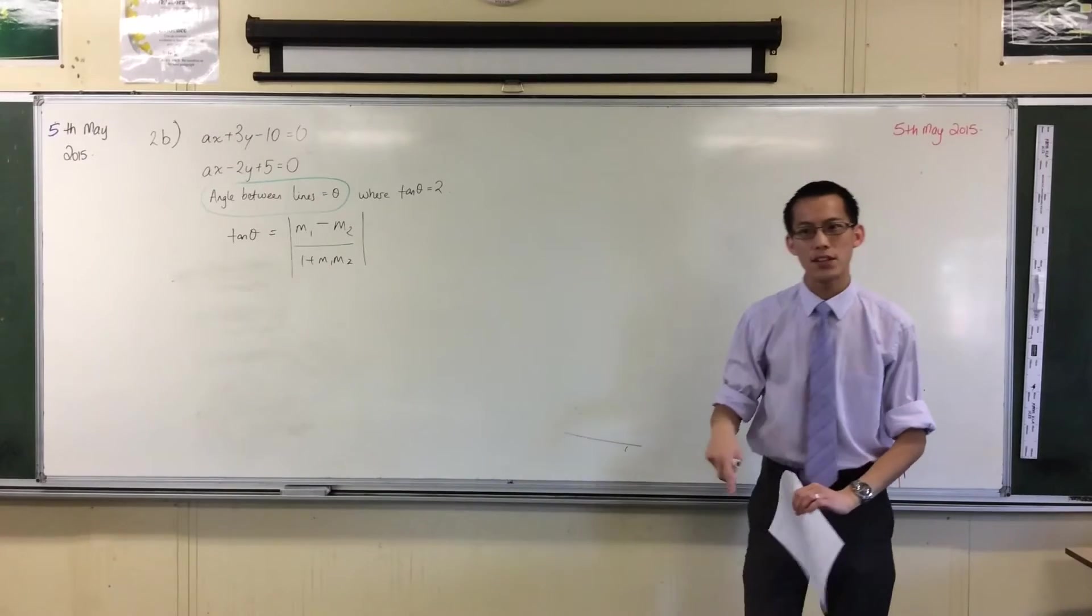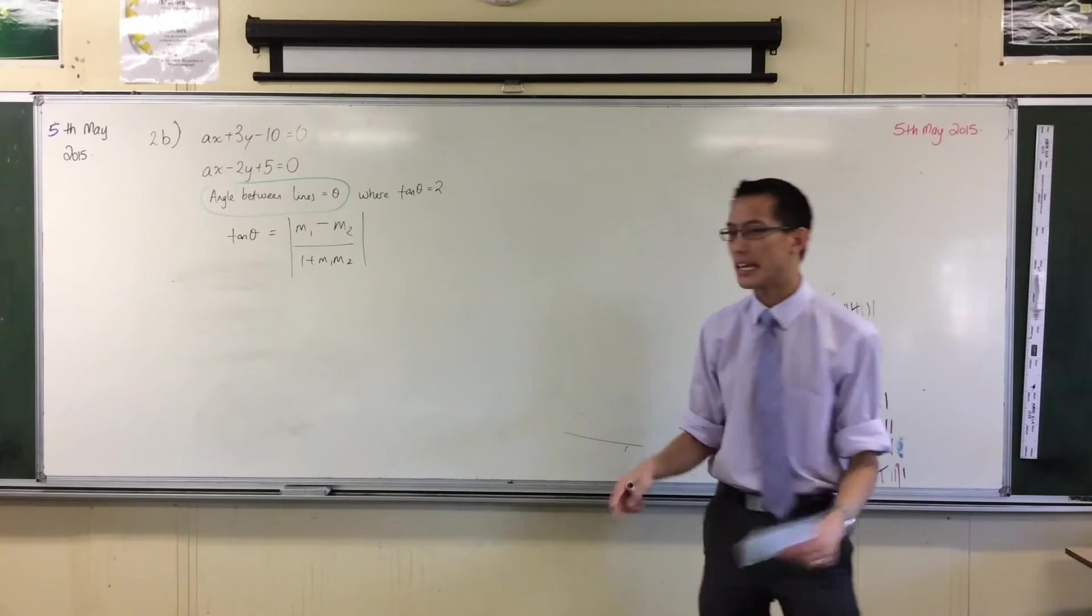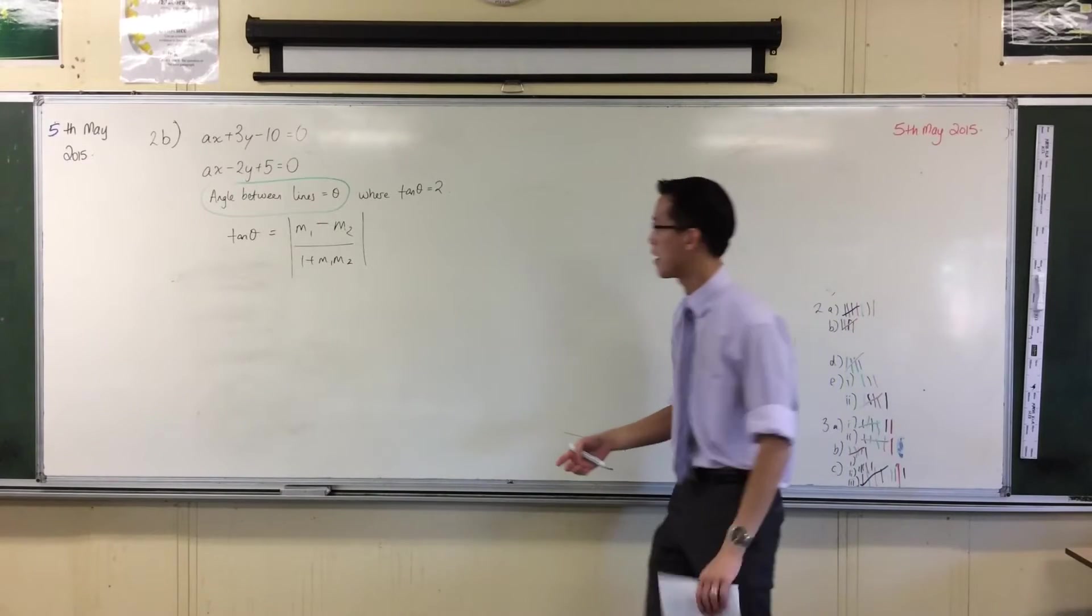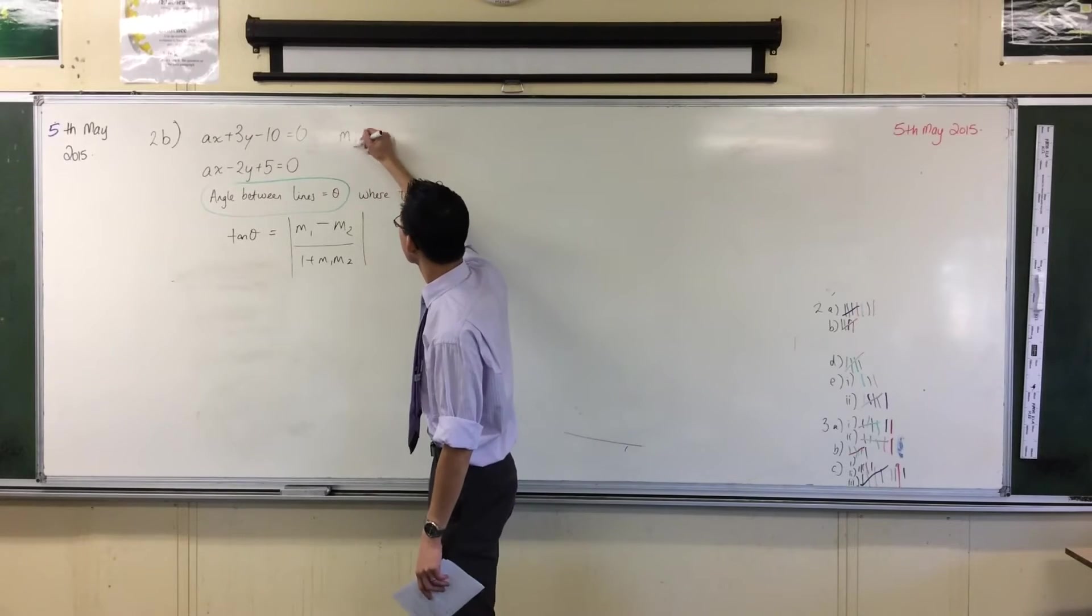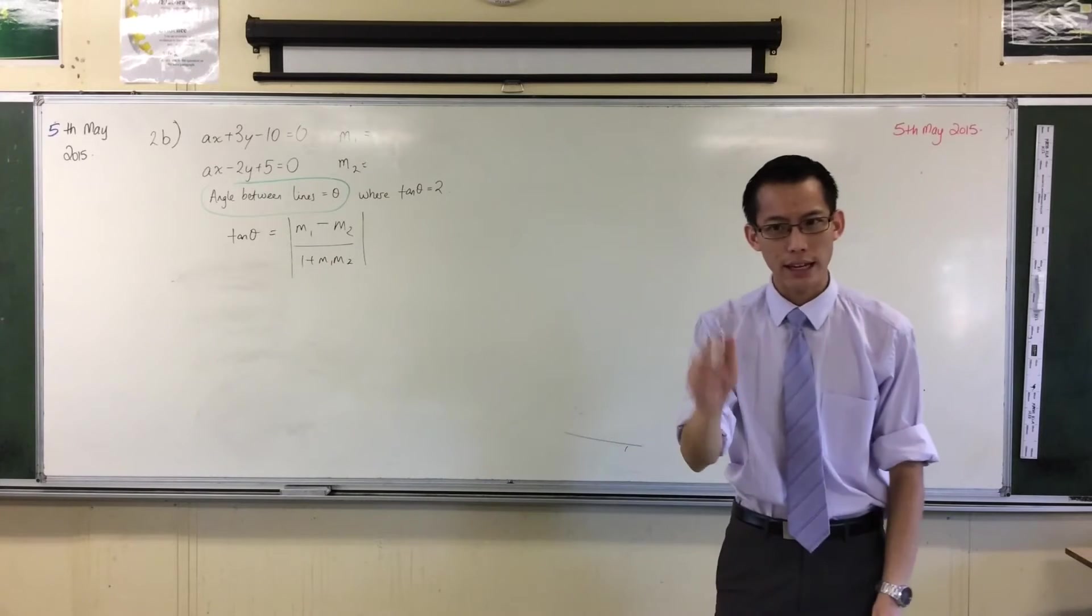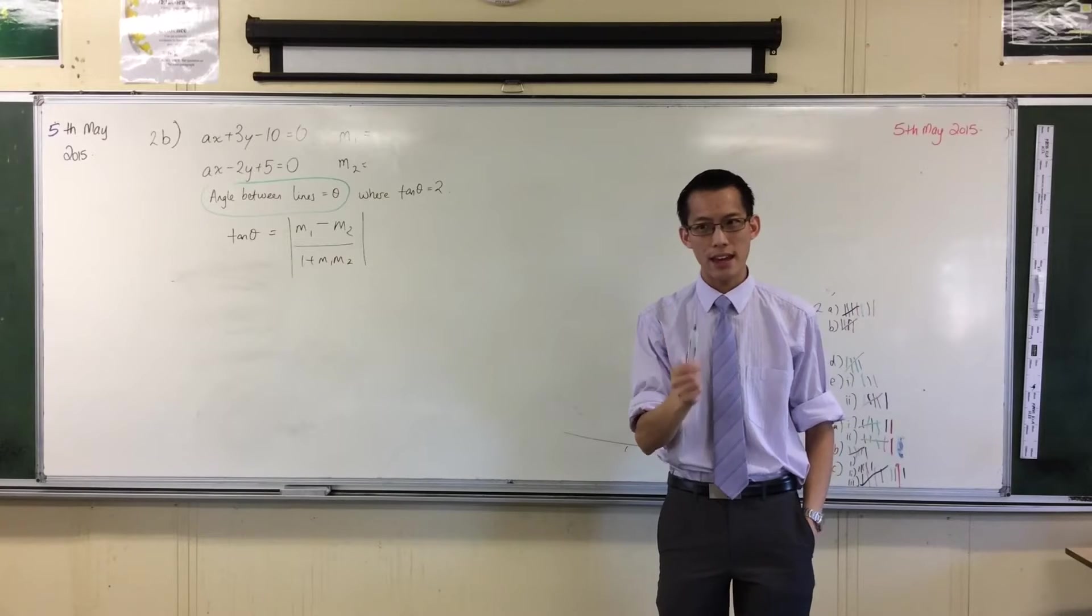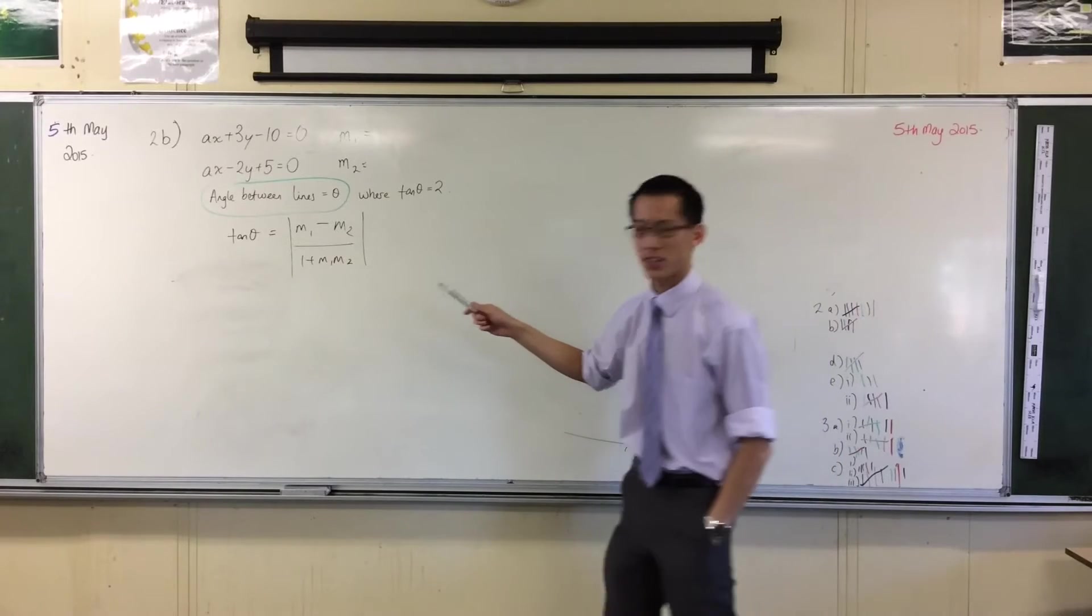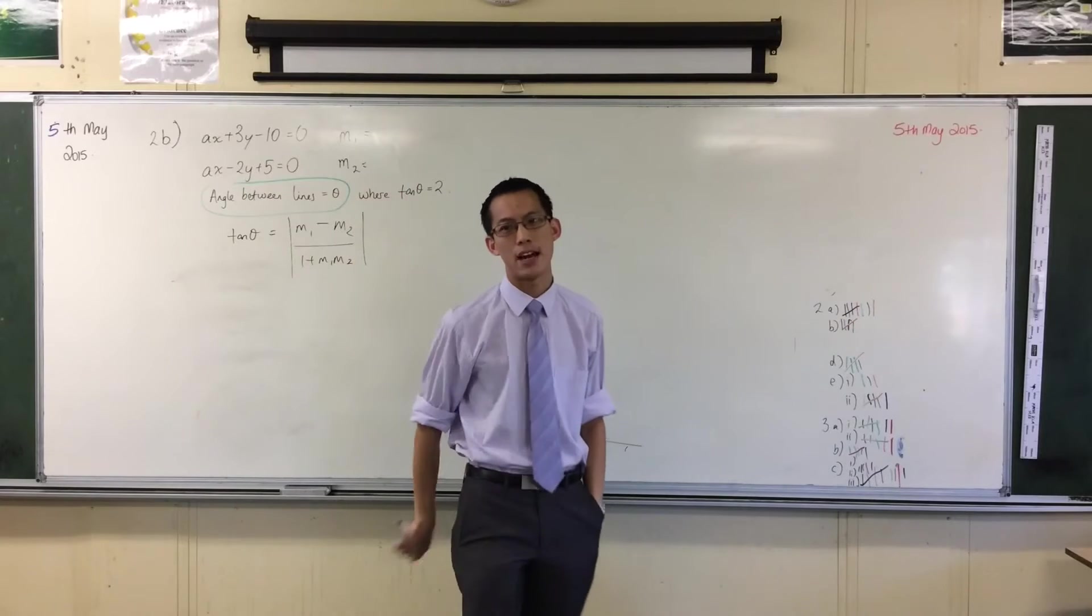When you have a look at these two lines they've been given to you in general form which is not very nice but it's not impossible to work with them. If I designate this line one and I designate this one line two, just think for a second - without doing any paper calculations - what would we have to do with this to get the gradient out of it? Don't do it, just tell me what we'd have to do.